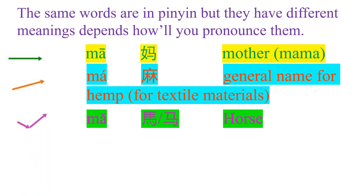The third tone is the falling-rising tone. Again, the word MA, but since this is a falling-rising tone, we read this as MA. That means 'horse.' If your tone is falling-rising — MA — that is referring to a horse.